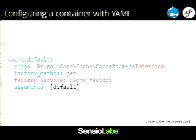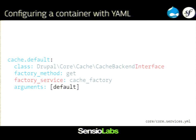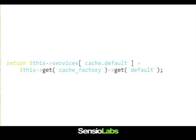You can also use other services as factories. Here I'm getting a service which is a factory, and then I'm calling a method on this factory that is going to create the object I want. For example, to create a cache.default service — this is an instance of the cache backend interface — I don't know what kind of implementation I'm going to have, but the cache factory service is able to give you one by calling the get method. That's also how you can use an interface which can't be instantiated, because it's handled by the factory.